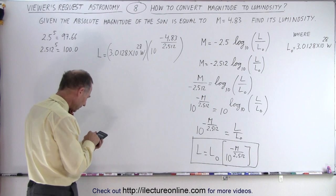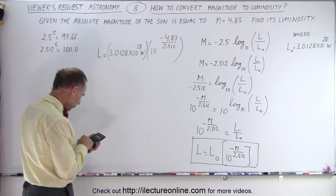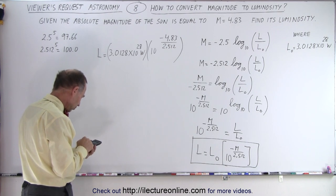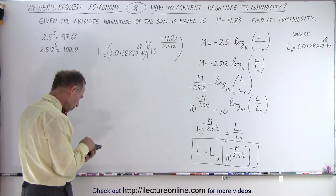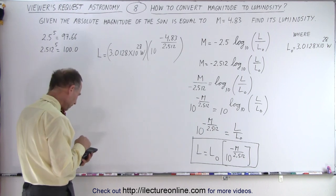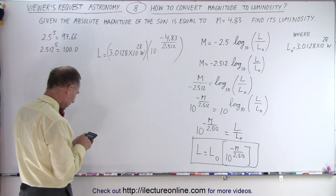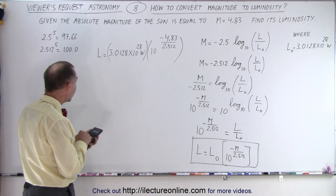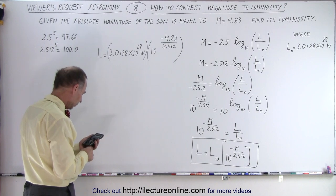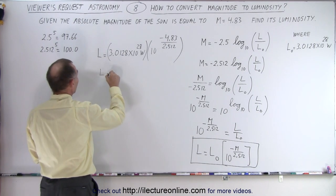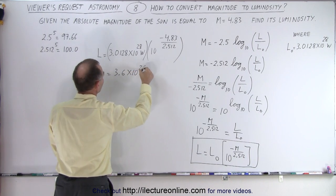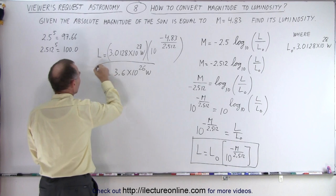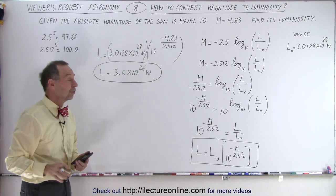So 4.83 divided by 2.512, we make that into a minus, and we use that as the exponent of 10. There we go. And then we multiply that times 3.0128 e to the 28 equals... So that gives us a luminosity of 3.6 times 10 to the 26 watts. And that's the generally accepted value of the luminosity of the Sun.